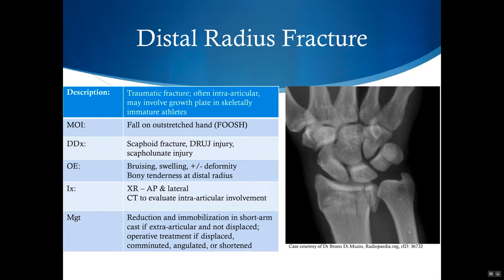Usually athletes will have focal bruising, swelling, and tenderness at the distal radius. There may be an obvious deformity, but the wrist may look normal, especially if there's no displacement and early on before there's any swelling. The diagnosis is made on x-ray, but CT might be needed to further evaluate if surgery is necessary or for surgical planning. In the x-ray here, you can see an intraarticular comminuted fracture.